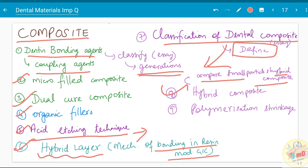Know what the hybrid layer is, when it forms, and what its properties are. If you need any clarity regarding the mechanism of bonding of composite, you can refer to our video on composites, and if you need any specific topic dealt with in detail, please mention it in the comments. Polymerization shrinkage has also been asked.